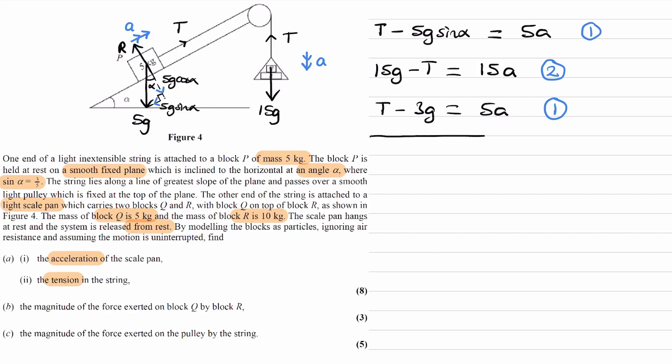So, if we add the two things up, the T's cancel because we have minus T and then plus T. 15G minus 3G would give us 12G. And on the right-hand side, we get 20A. Acceleration is then 12 over 20 G, which is 3 over 5 G.